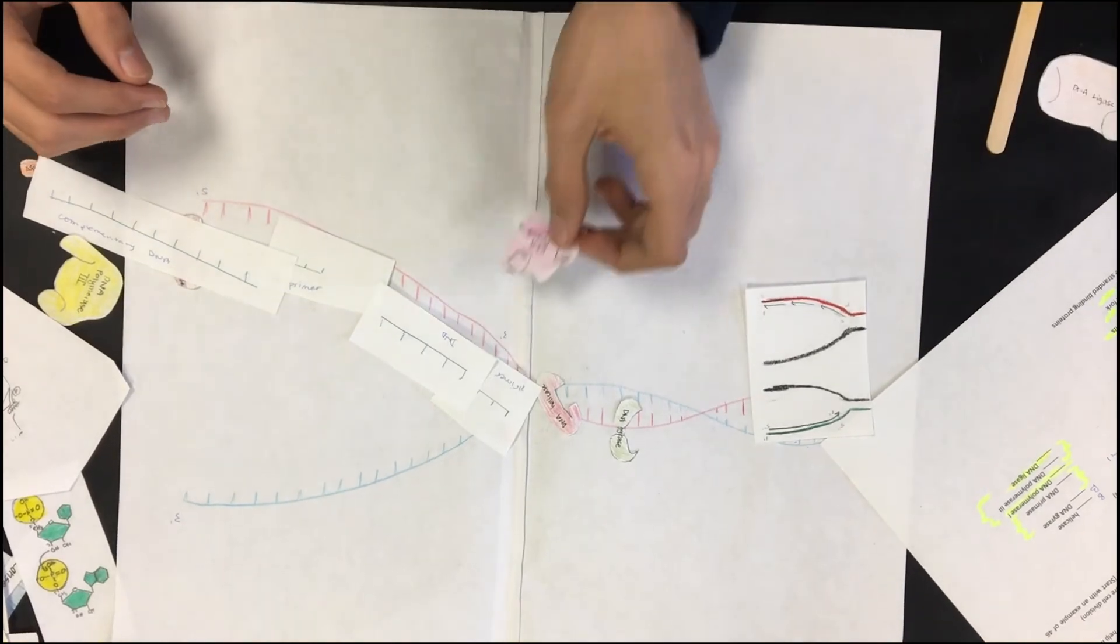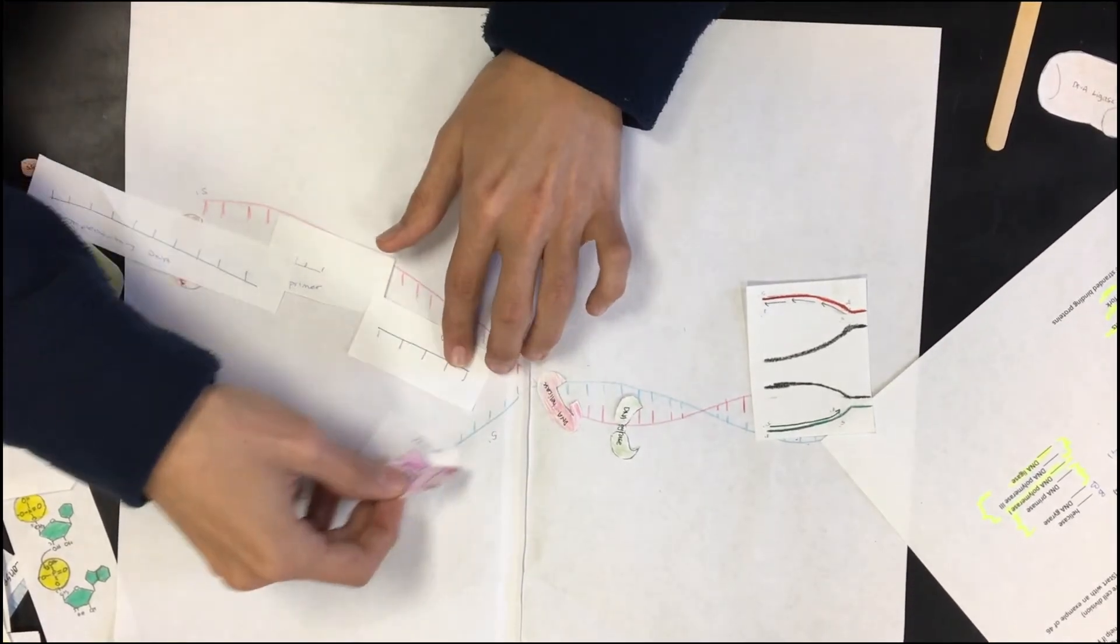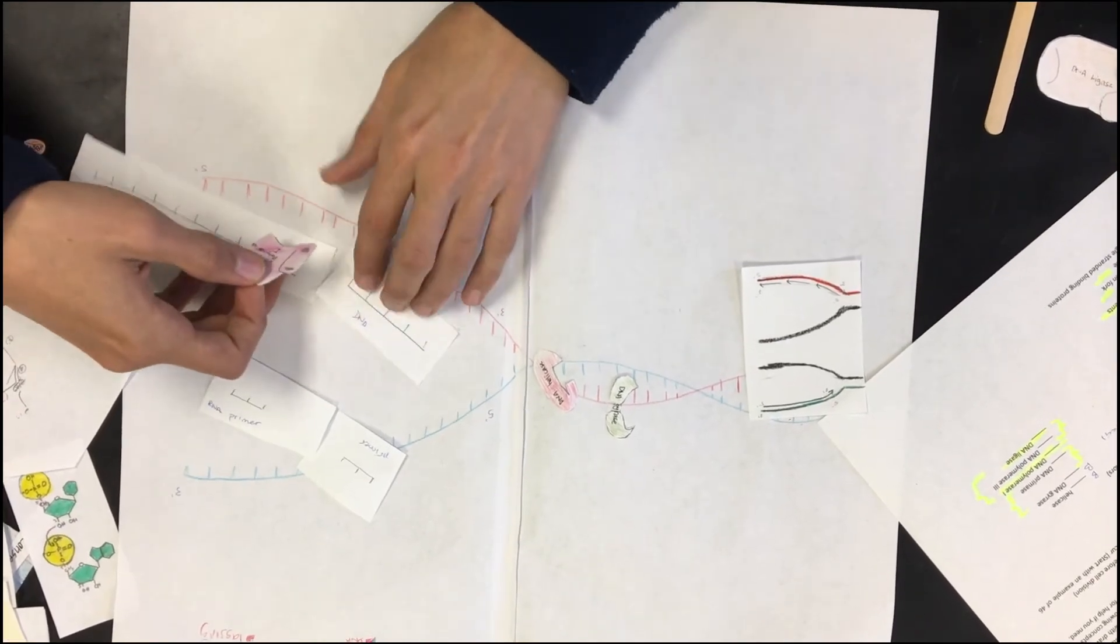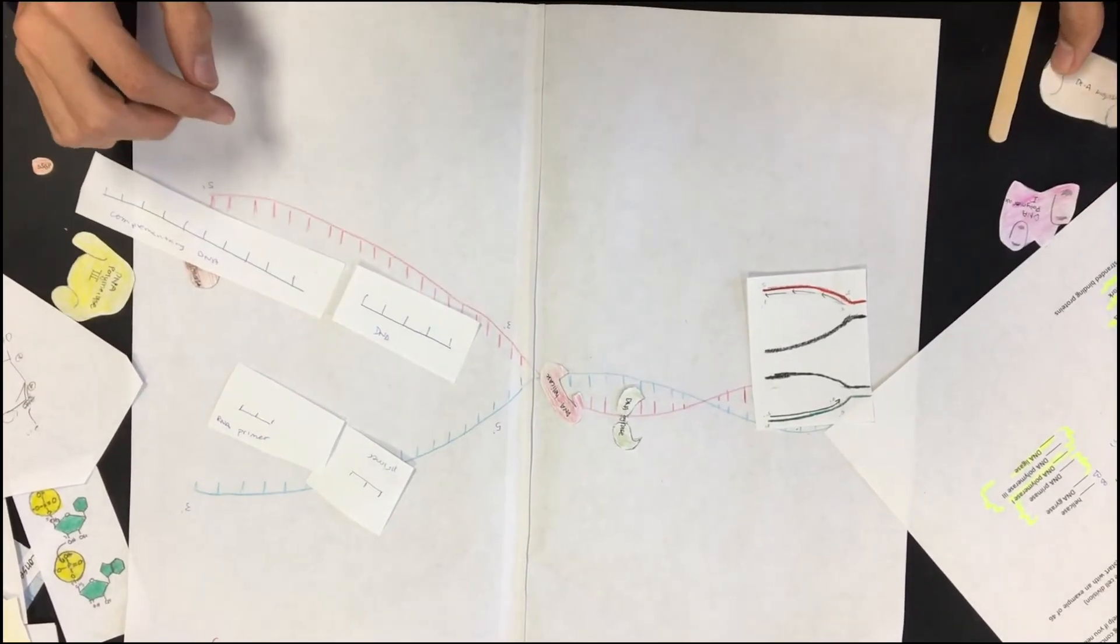And, the job of DNA polymerase 1 is to come in, remove the RNA primer, and just leave us with the DNA. So, now you have DNA, but these two still aren't connected.